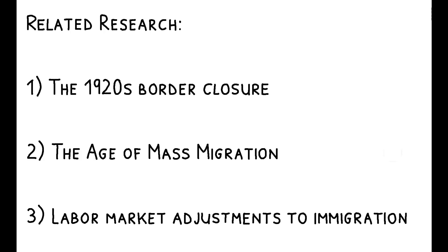To read more on this topic, you can check out the full paper and its references to other related research. These include other papers studying the effects of the 1920s border closure on outcomes ranging from patenting and innovation to anti-immigrant sentiment and mortality, research on the economics of the age of mass migration from Europe, and finally, a broader set of questions on labor market adjustments to immigration.